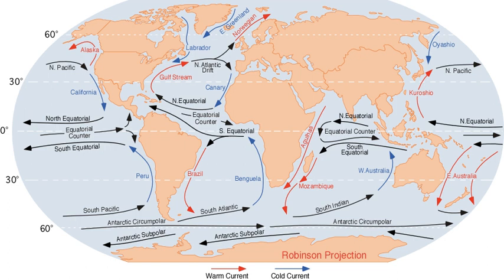Surface currents are found on the surface of an ocean, and are driven by large-scale wind currents. They are directly affected by the wind. The Coriolis effect plays a role in their behaviors.